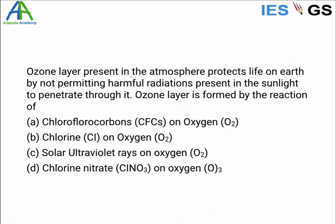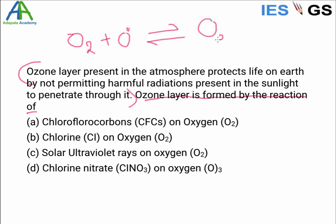The ozone layer present in the atmosphere protects life on Earth by not permitting harmful radiations in sunlight to penetrate through it. The question asks: how is the ozone layer formed? We have seen the formation and destruction of the ozone layer — it is a reversible process. Ultraviolet rays are absorbed in the stratosphere, and since they are consumed there, we are protected from harmful radiation. This process happens continuously in the stratosphere.